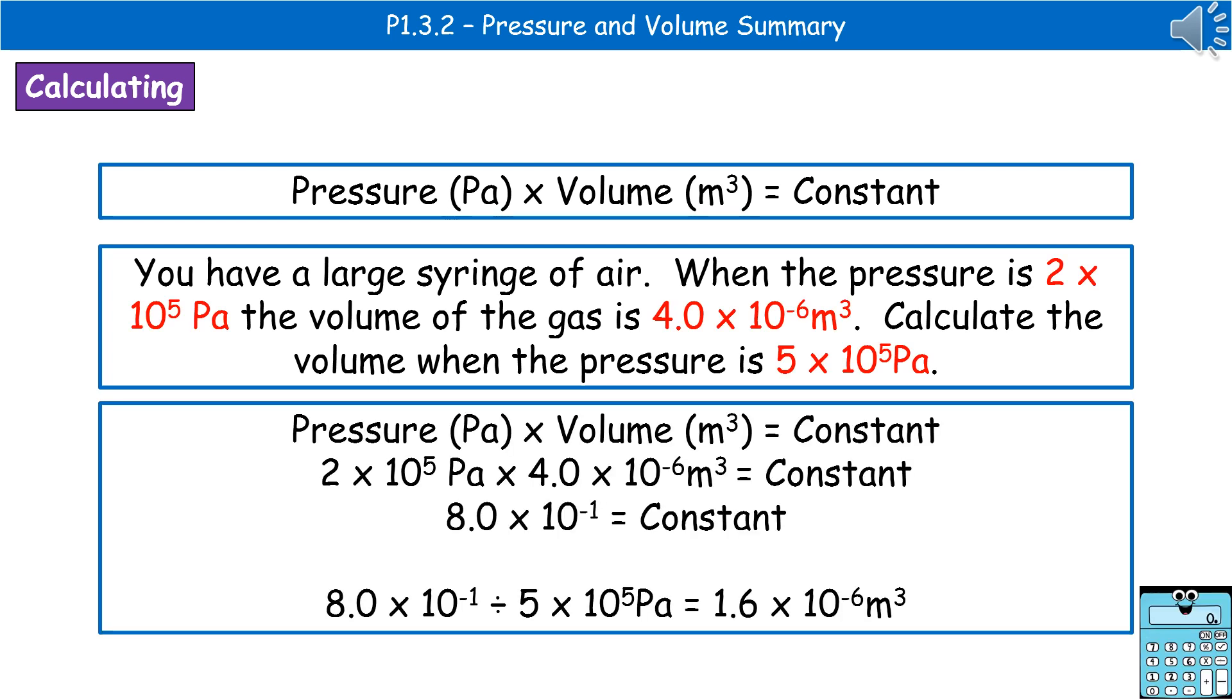So the first thing we do is pick out those important parts in the question. And remember, you're allowed to highlight, underline, circle the key things, just write them in a list. Whatever works for you so that you don't have to keep reading the whole bit of text again. So we've got three different numbers there, which I've highlighted in red.